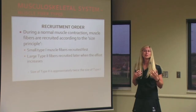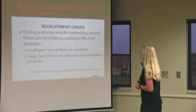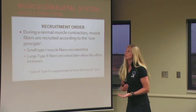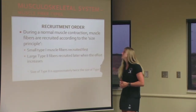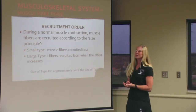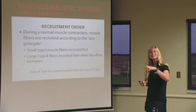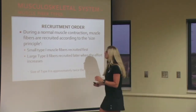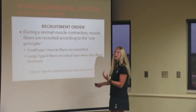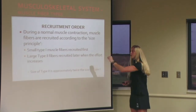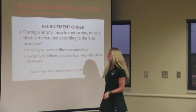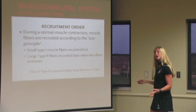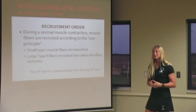Our body recruits these fibers in a certain order, starting with the small type 1 muscles first. They're small, they don't need blood or stored energy — they rely on the capillaries. The small type 1 muscles are recruited first, followed by the larger type 2 fibers, recruited later when effort has increased. Type 2 fibers are larger — twice the size of small muscle fibers — which explains the difference in physique between endurance athletes and power and speed athletes, and why they excel in certain athletic endeavors.